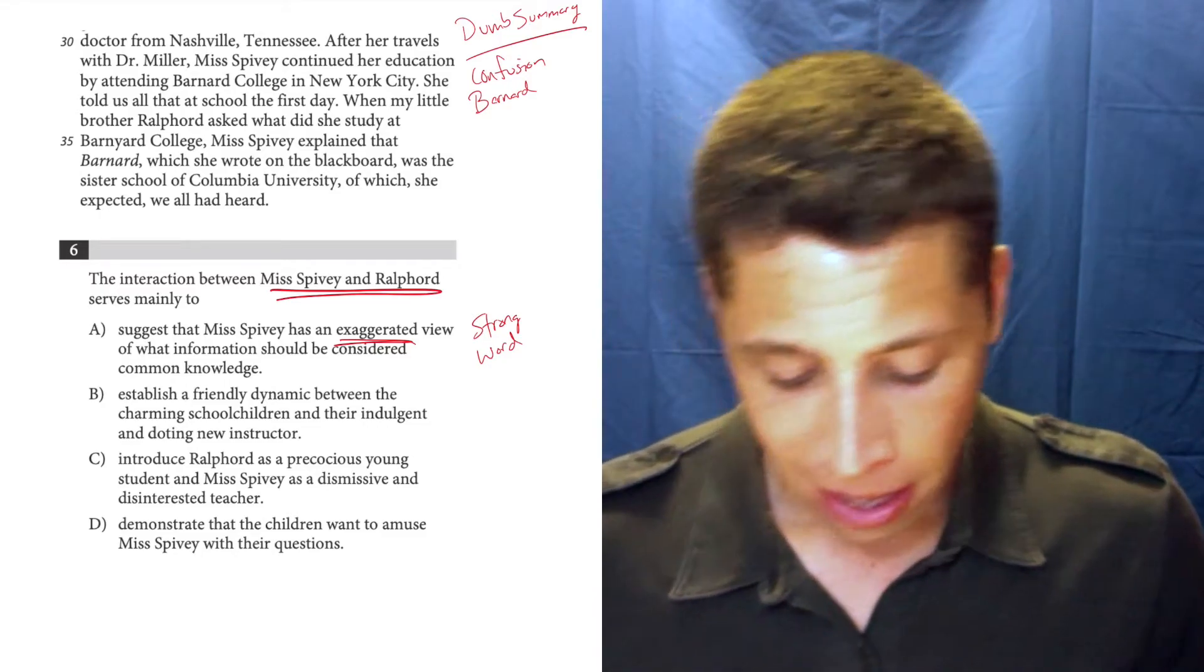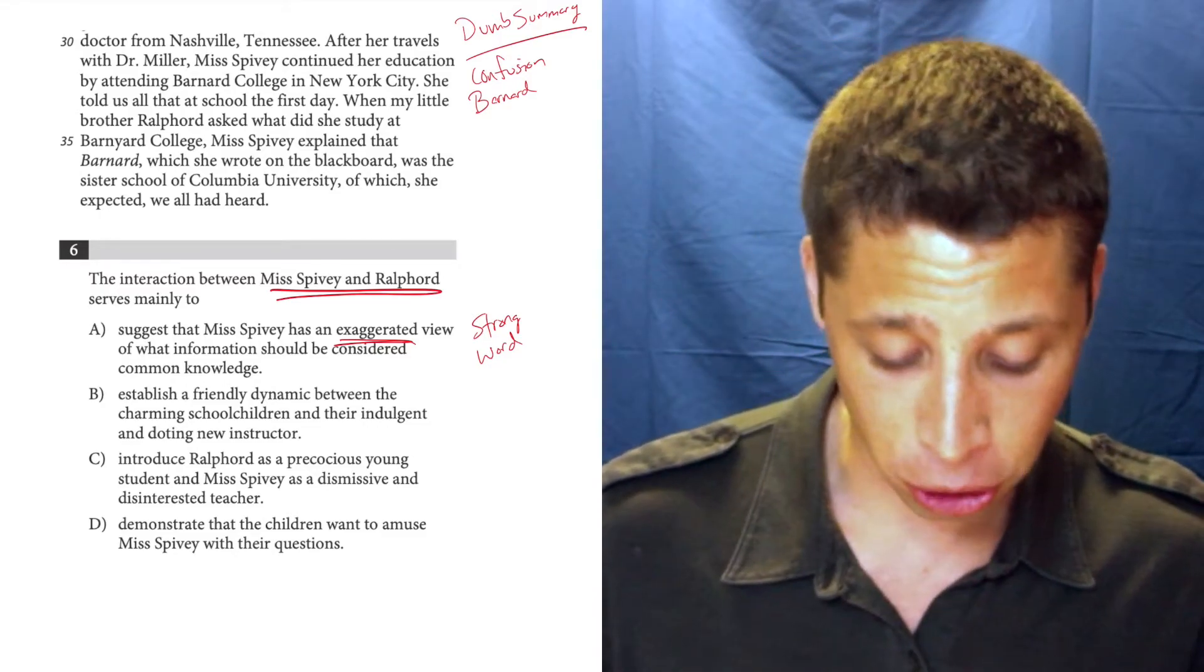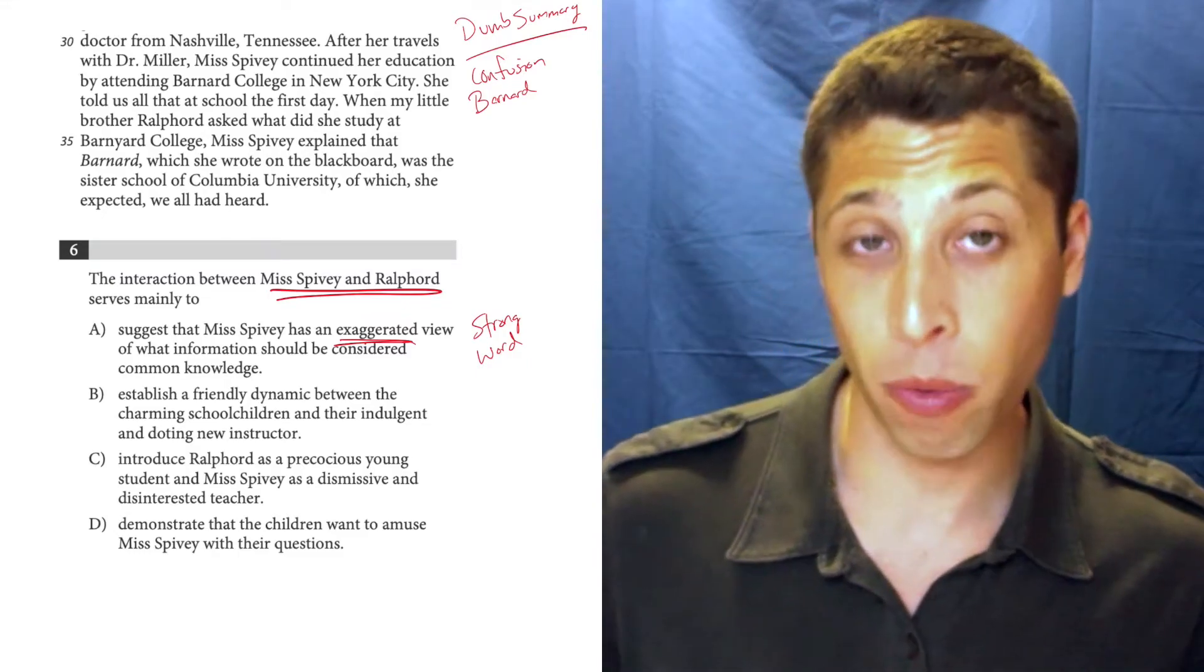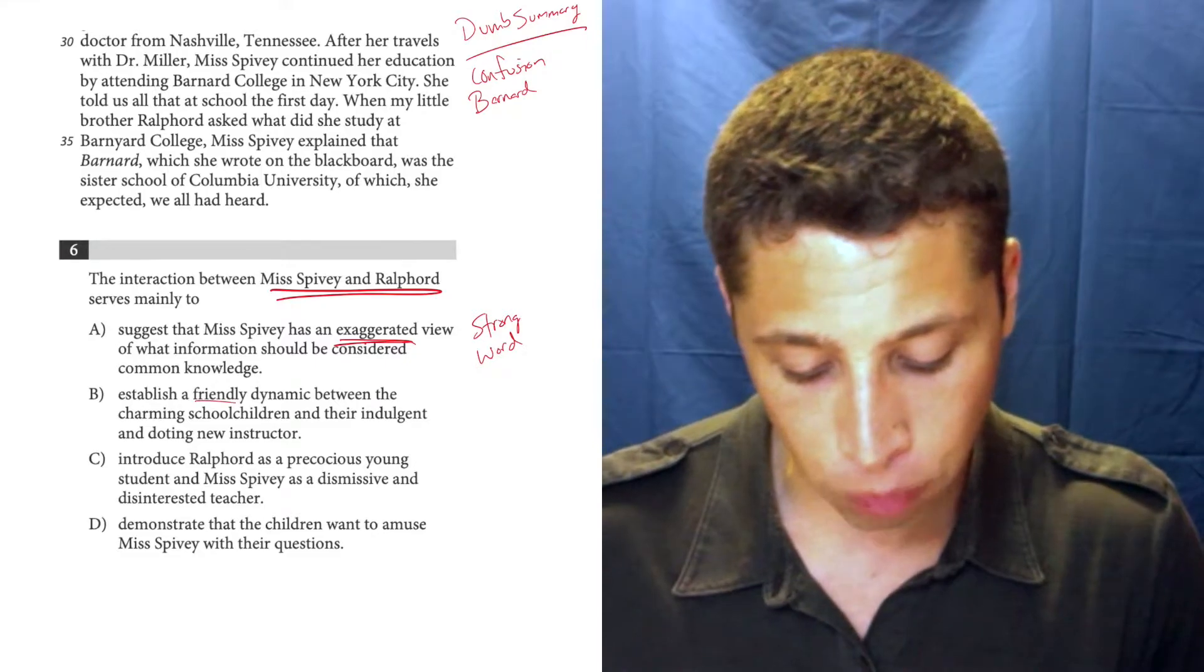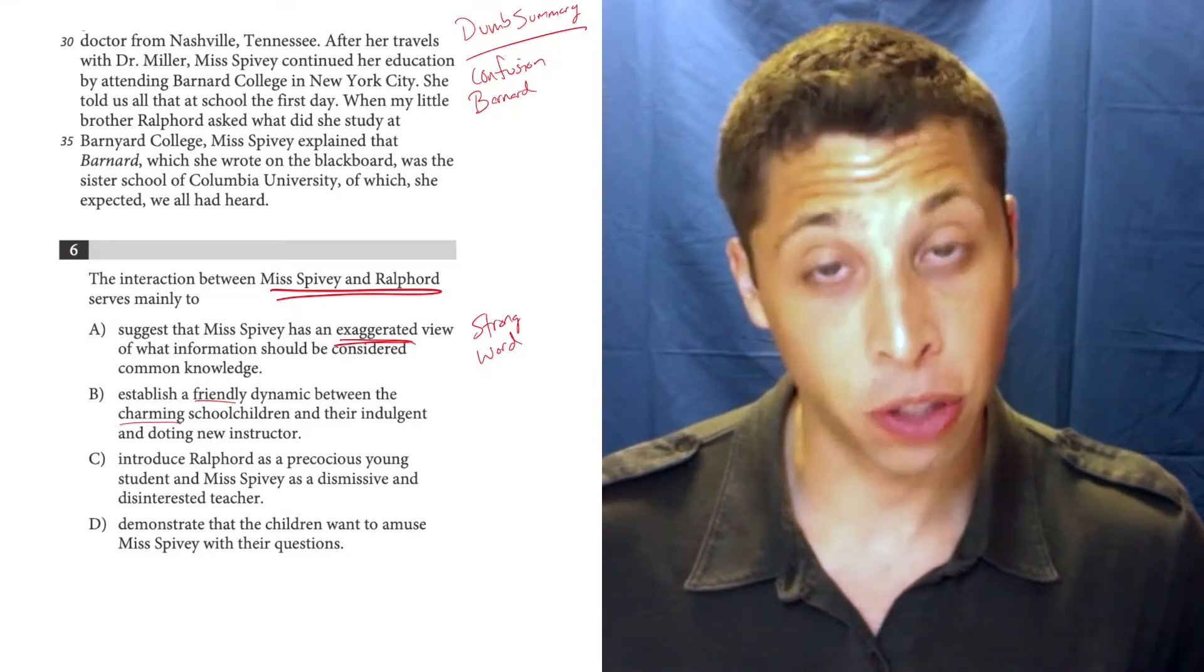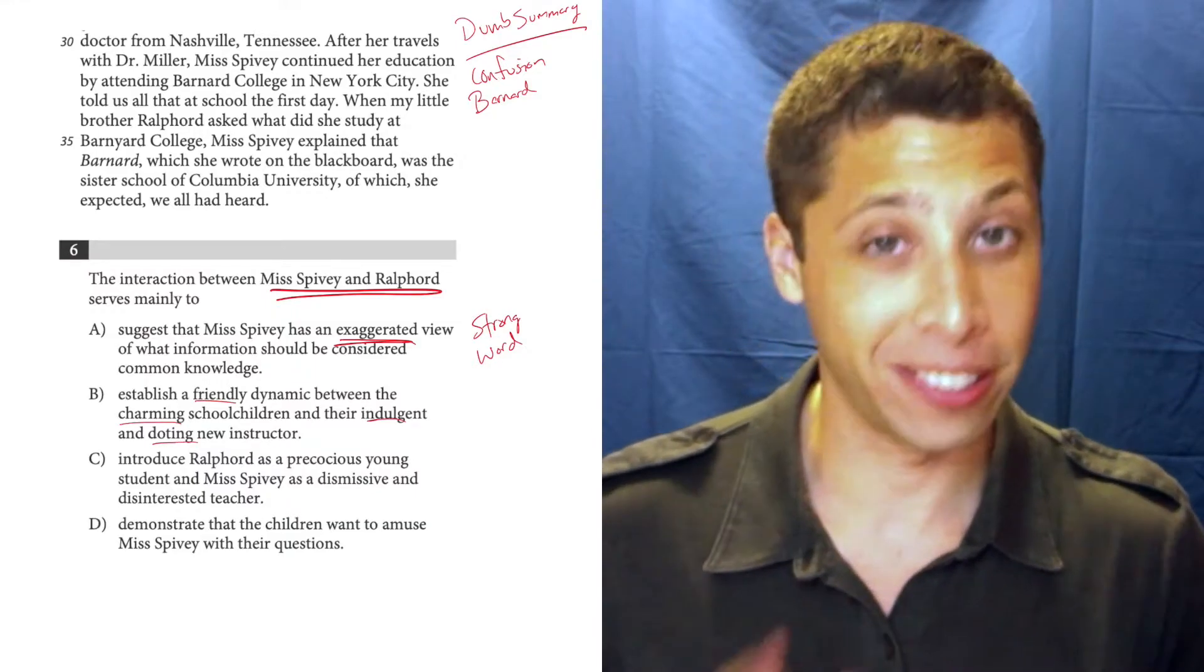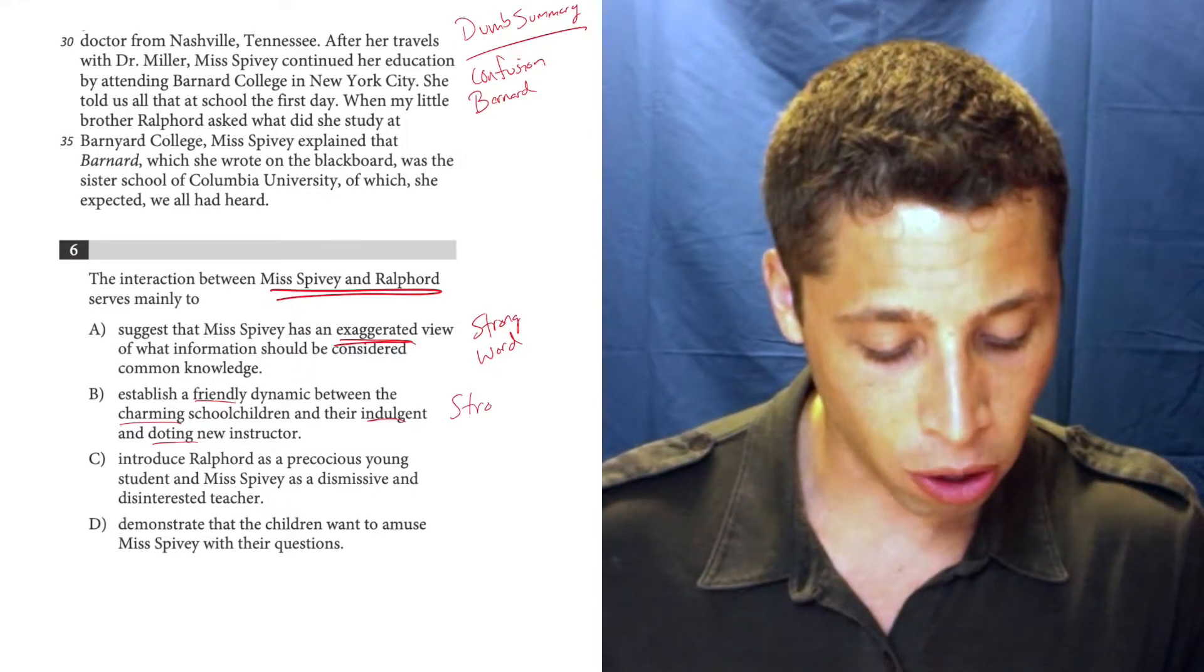Let's look at B. Establish a friendly dynamic between the charming school children and their indulgent and doting new instructor. Well, there's a lot of strong words in that choice, right? We need proof that it's friendly. We need proof that the children are charming. We need proof that the teacher is indulgent and doting. Lots of adjectives, lots of strong words.